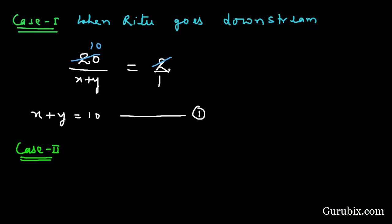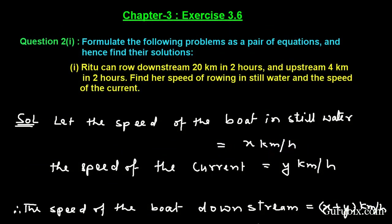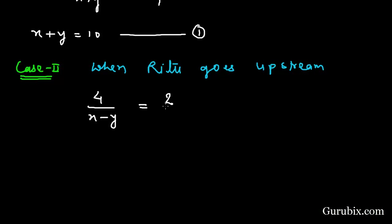Case 2: When Ritu goes upstream, she covers 4 km at a speed of x minus y km per hour. Using distance divided by speed equals time, and the time is 2 hours, we get 4 divided by (x minus y) equals 2. Cancelling 2 with 4 gives 2, and cross multiplying gives us x minus y equals 2. This is equation number 2.